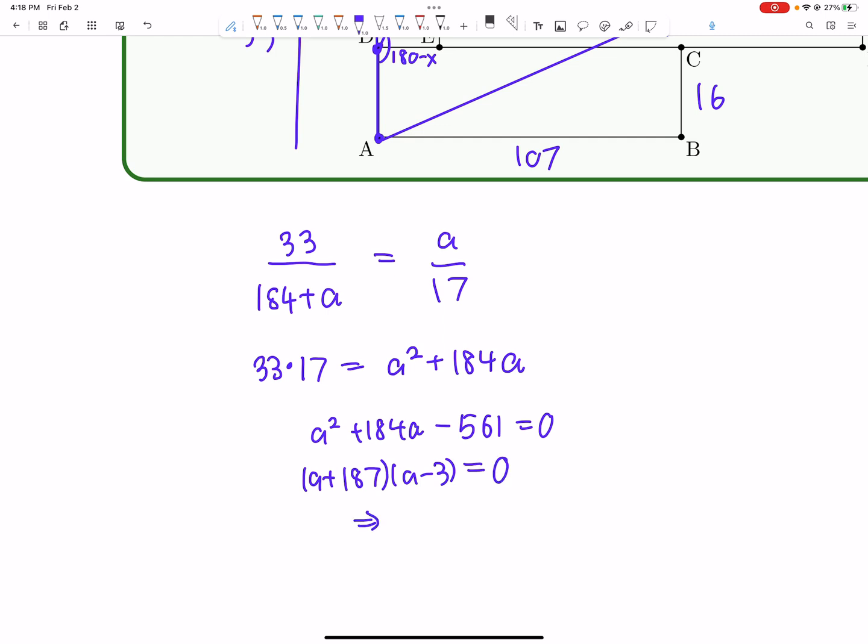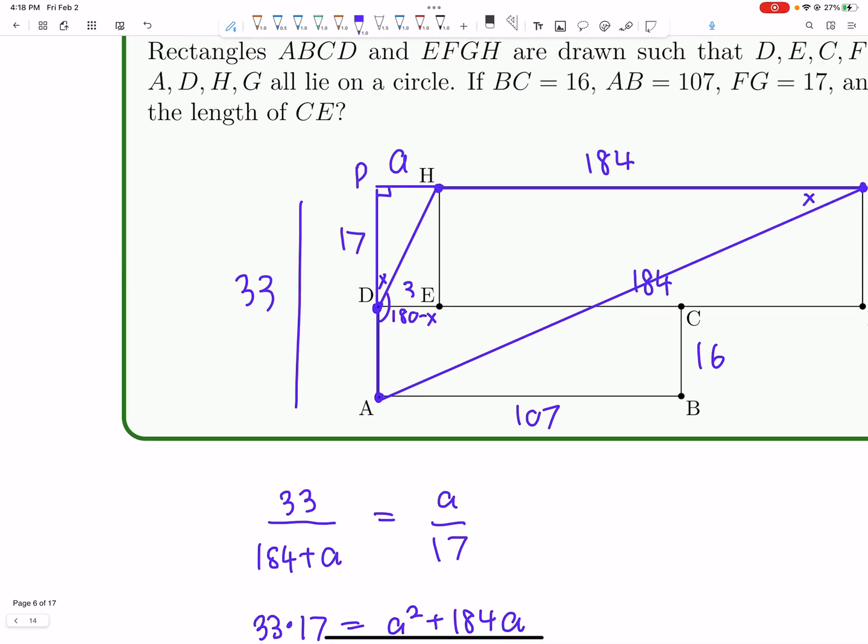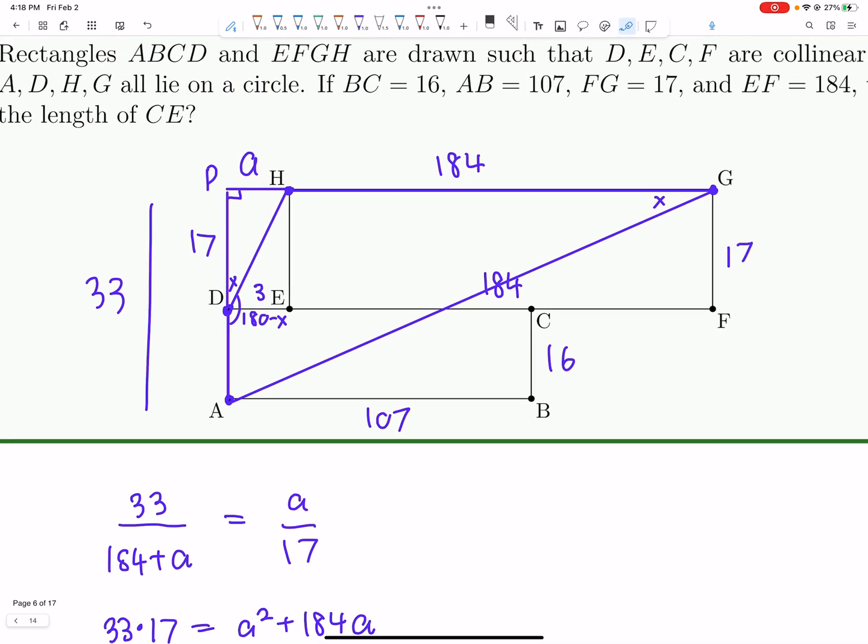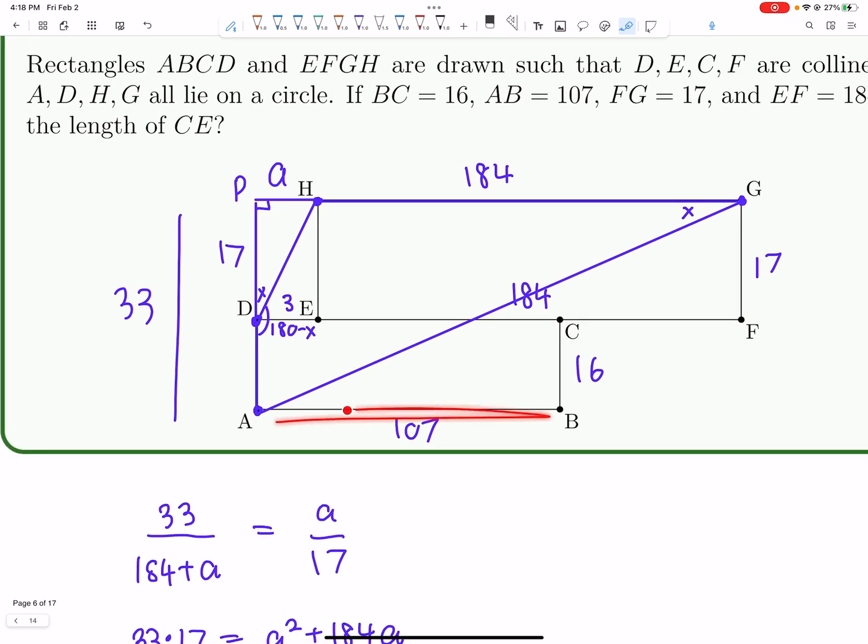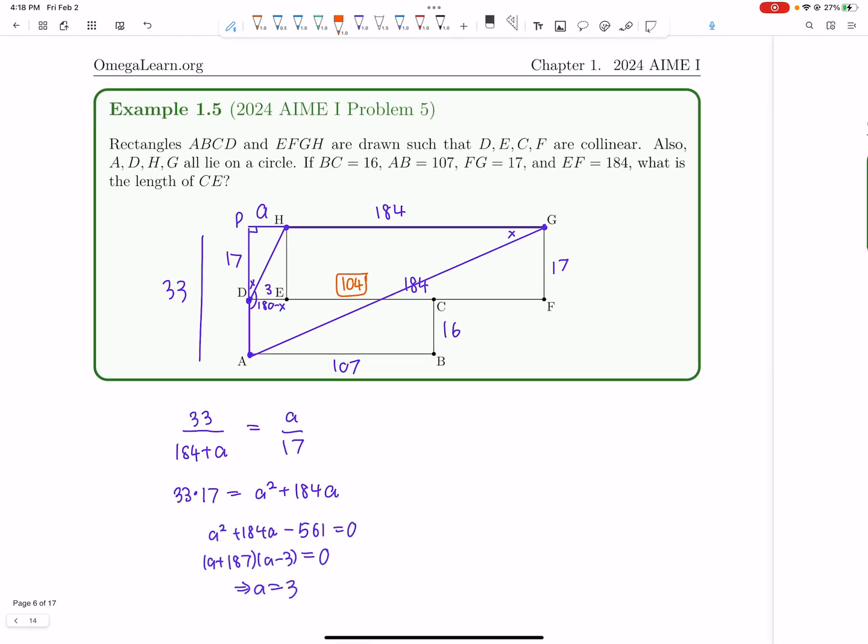And then, therefore, A must be 3, because clearly A can't be negative. So now we know A is 3, so DE is 3. And therefore, we know DC, or it's the same as AB, is 107. So EC itself is just 104. And so 104 is our final answer, because 107 minus 3. I hope you enjoyed this pretty cool problem from the AIME.